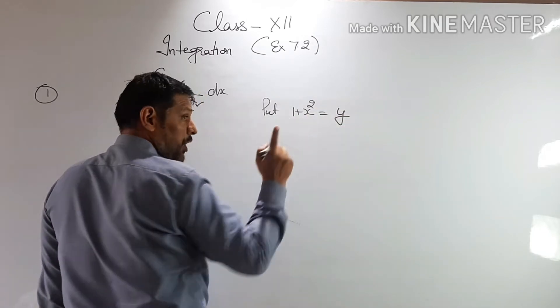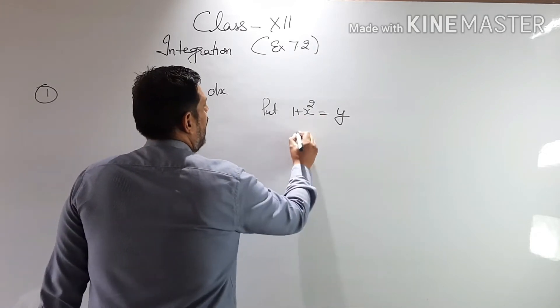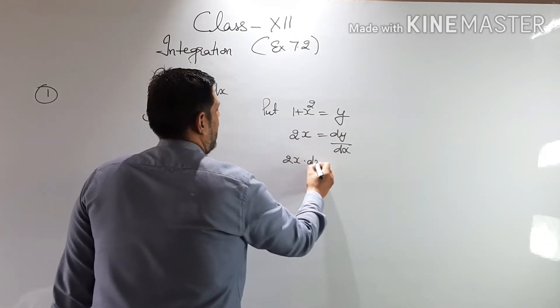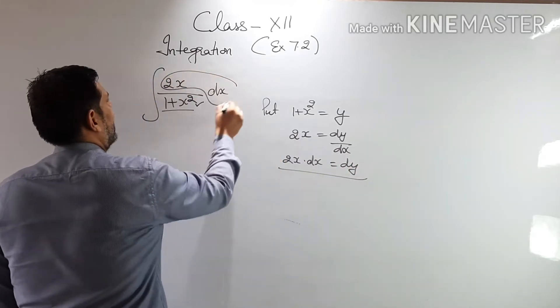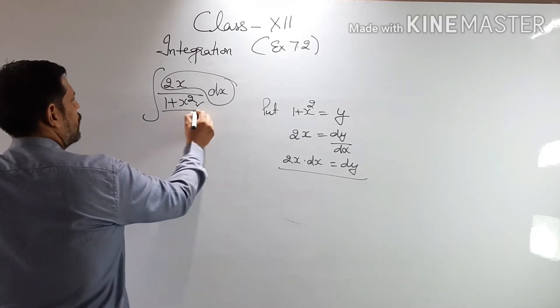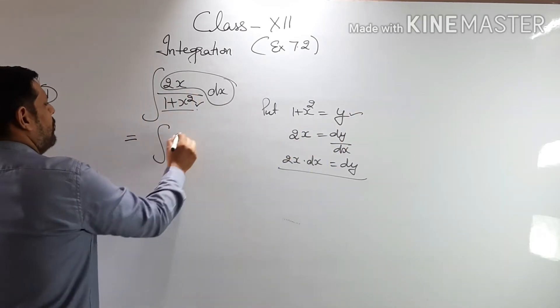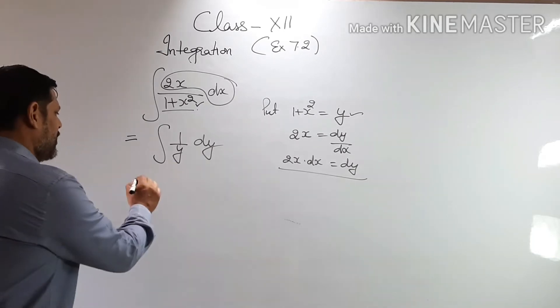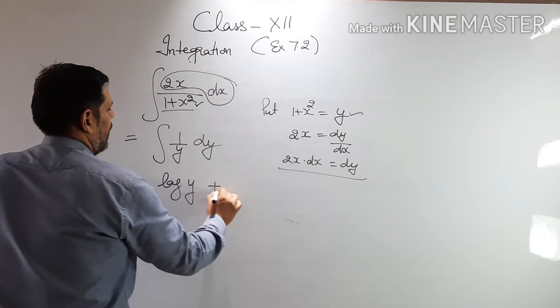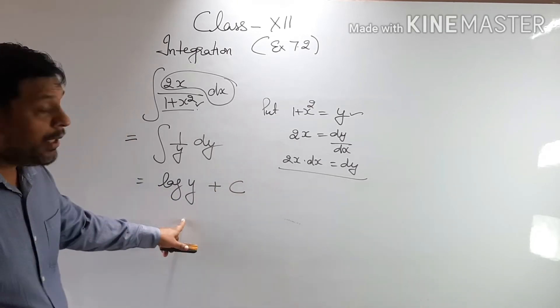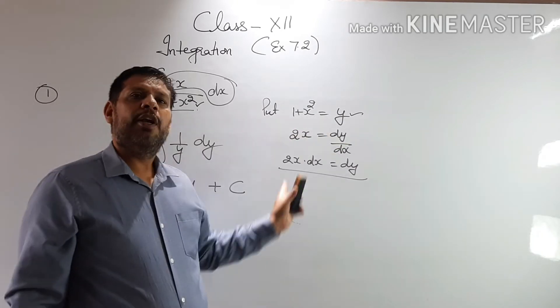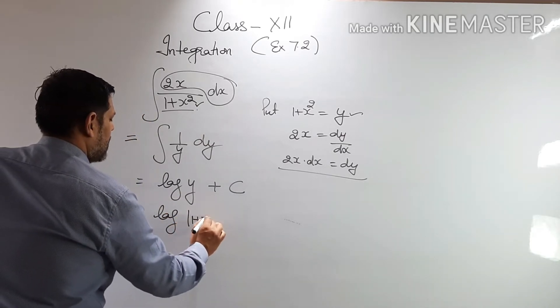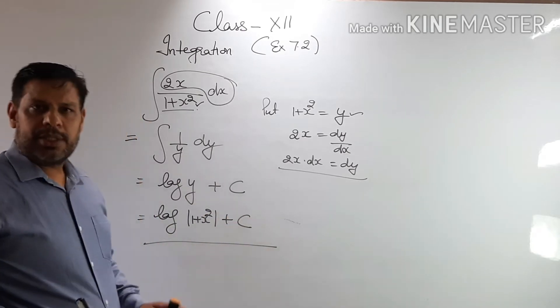We have to integrate with respect to x. So we will put 1 plus x square equals y. If I differentiate with respect to x, this derivative is 0, x square derivative is 2x, and this is dy by dx. Means 2x into dx will be dy. So this 2x into dx will become dy and this 1 plus x square is your y. So this has become 1 by y dy. And we know the integral of 1 by y, that is log of y plus c as the constant of integration.